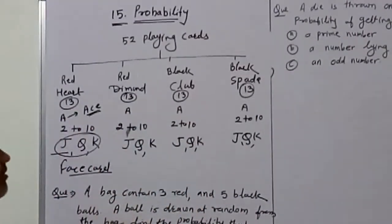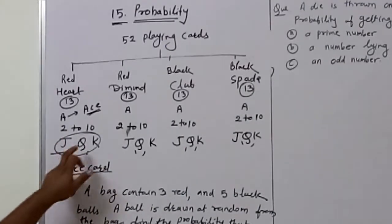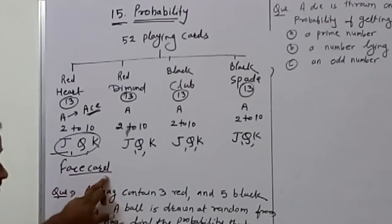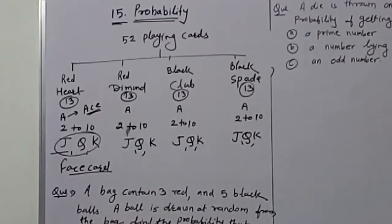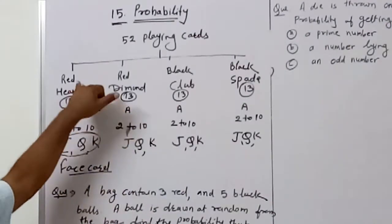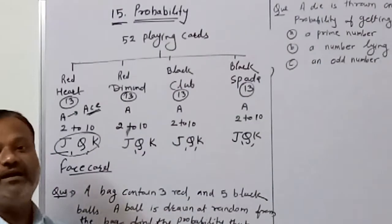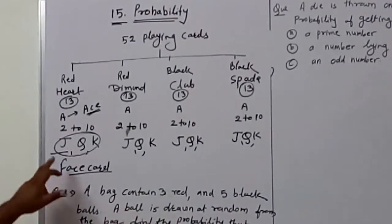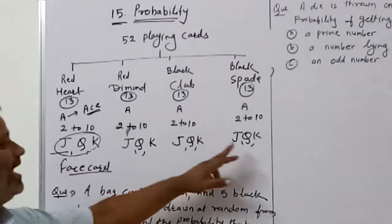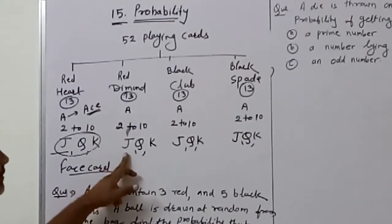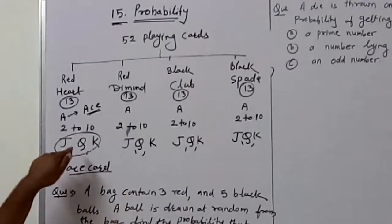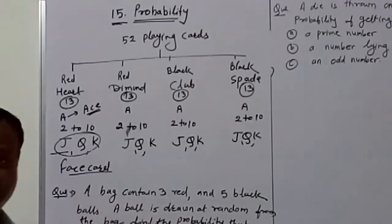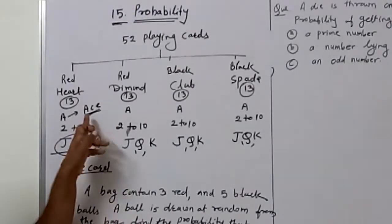How many face cards are in one pack of 52 playing cards? Each suit has 3 face cards (J, Q, K), so 3 times 4 equals 12 face cards total. There are 4 aces. There are 26 red cards and 26 black cards. There are 2 red kings and 2 black kings, 2 red jacks and 2 black jacks, 2 red queens and 2 black queens. Total face cards: 12. Total aces: 4.